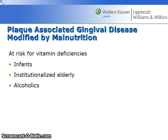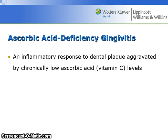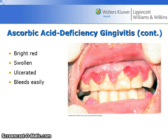Regarding plaque-associated gingival disease modified by malnutrition: patients at risk for vitamin deficiency include infants, institutionalized elderly, and alcoholics. Ascorbic acid deficiency is an inflammatory response to dental plaque aggravated by chronically low vitamin C levels. The gums look bright red, swollen, ulcerated, and bleed easily.